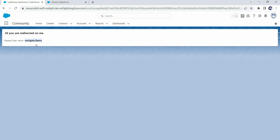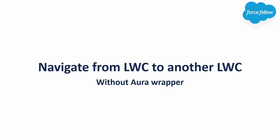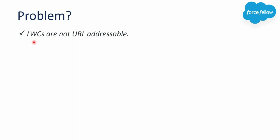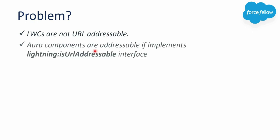You might be thinking what is the big deal here, and that we can simply navigate using the Navigation Mixin service. Yes, we can navigate using navigation services, but the problem is LWC components are not URL addressable, which means we can't directly refer to LWC components in a URL — unlike Aura components, where a component can be used in the URL if it implements the lightning:isURLAddressable interface. We don't have any such interface in LWC, so we can't directly navigate to an LWC component by name using navigation services.